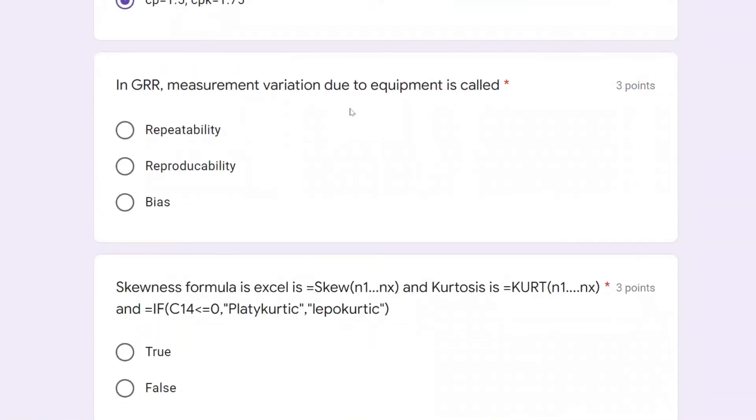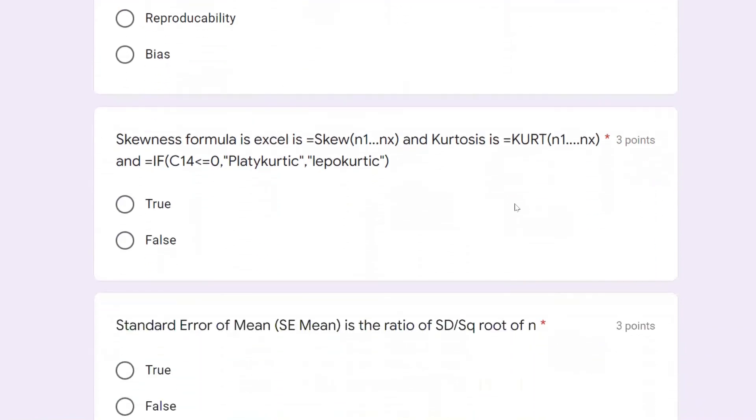In GRR measurement, variation due to equipment is called repeatability. Another follow-up question on skewness: skewness formula is Excel SKEW, you can just put the array, and Kurtosis you can use KURT, put the array. If the kurtosis value equals zero, it's called platykurtic. If the value is non-zero, it's called leptokurtic. It's true.